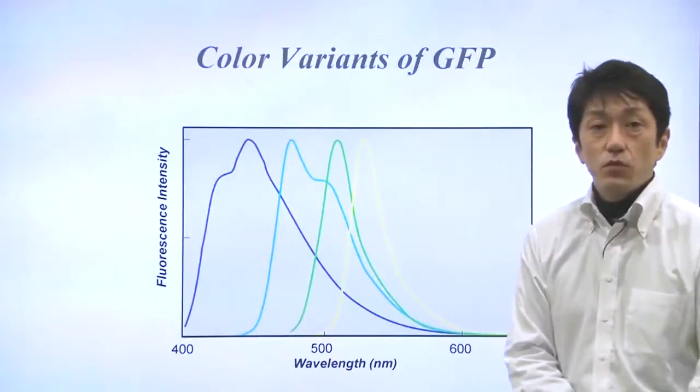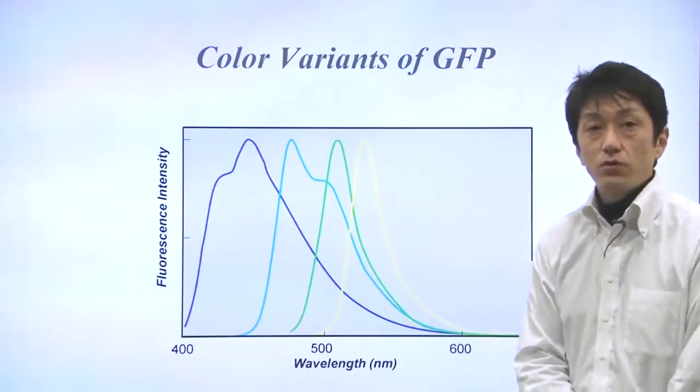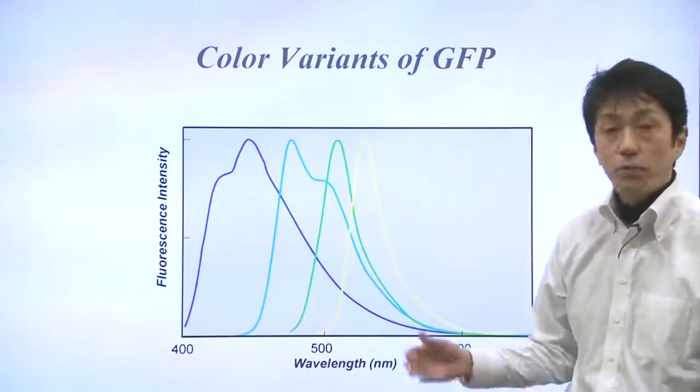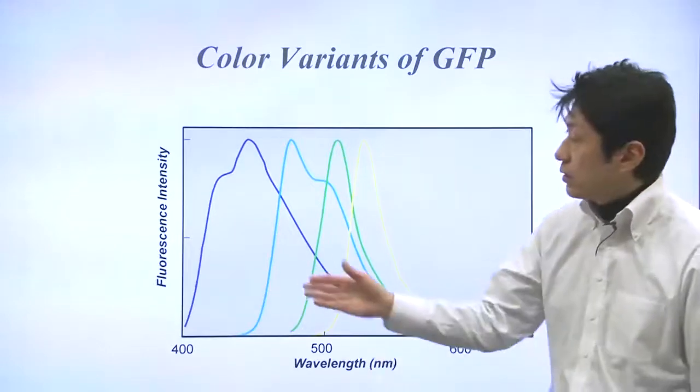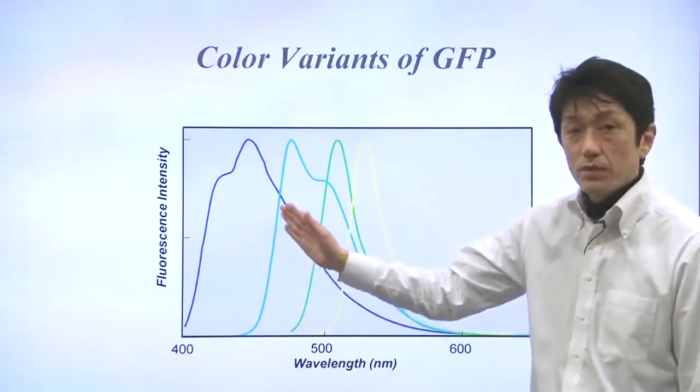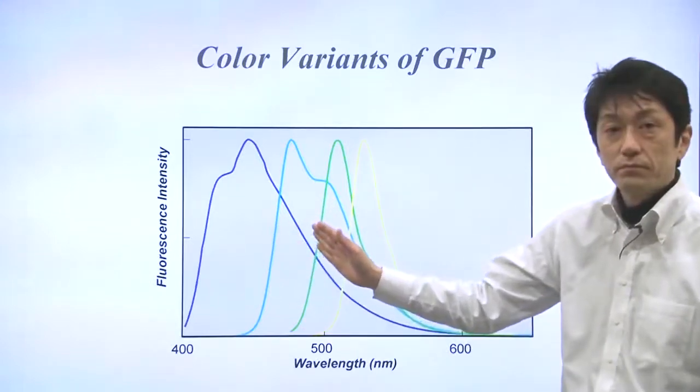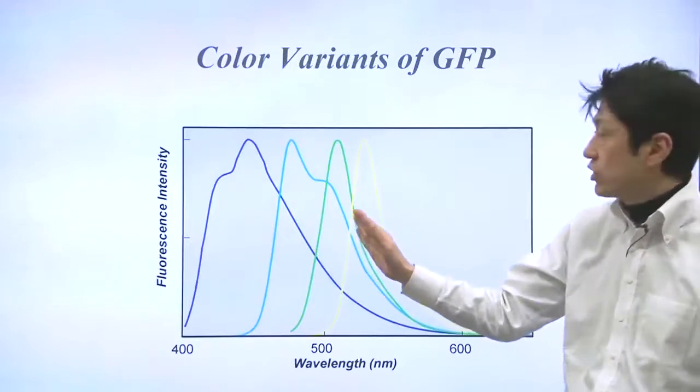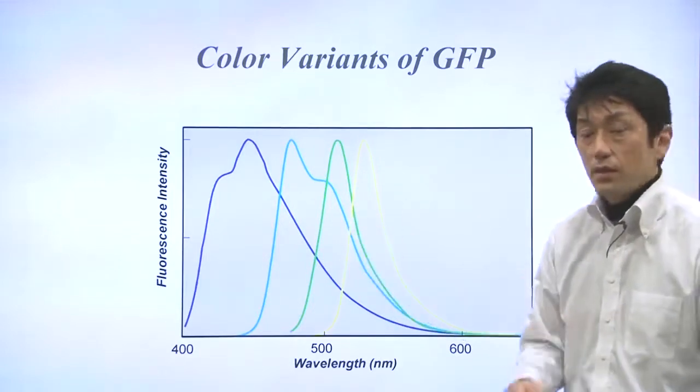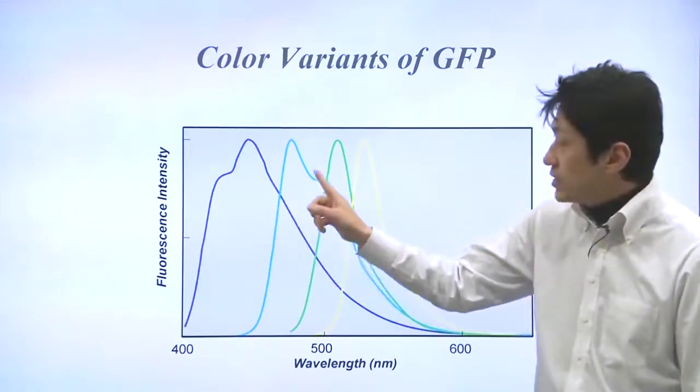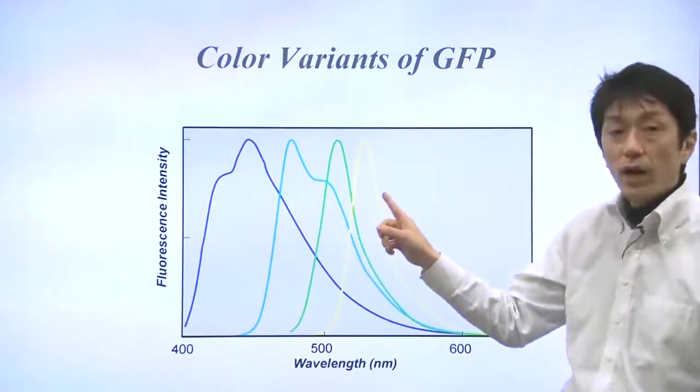GFP variants with different colors have also been created by point mutations. Blue one, cyan one, and yellow one in addition to GFP. BFP, CFP, and YFP.